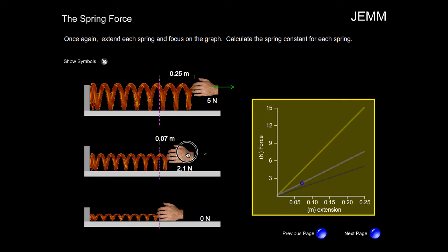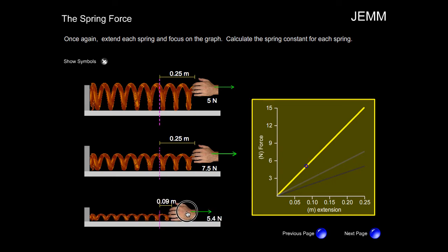Here is our next spring. As I move the spring back and forth, you can see the data point moving on the graph. And finally, here is the last spring. And notice the data point moving along the graph as I move the spring back and forth. This spring has the greatest spring constant.